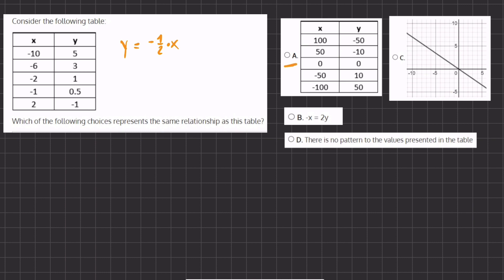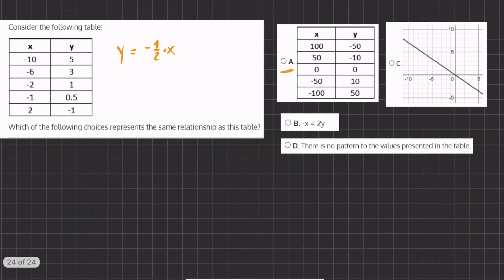let's go to answer A and check if the values here that are given will correspond to our formula. So now let's pick our first point, negative 100 and negative 50, and plug it into our formula. So instead of y, we'll plug in negative 50 equals negative half times x, which is 100.